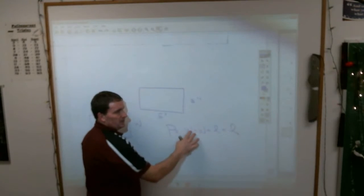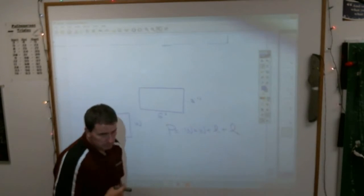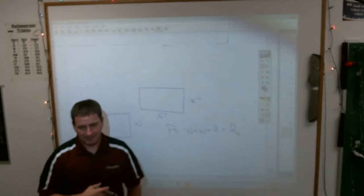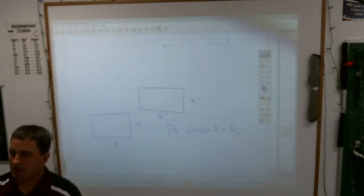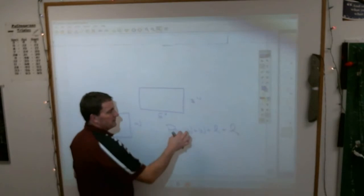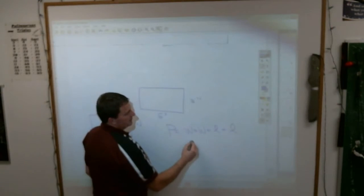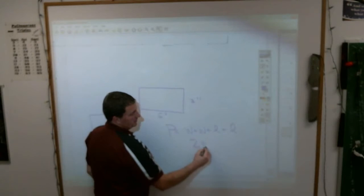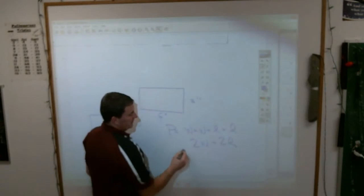If you add the same number together twice, like 8 plus 8 - 8 plus 8 is 16, right? Another way to write 8 plus 8 in shorter form is... 8 plus 8 is the same as what, Wade? 8 times 2. 8 times 2. So instead of saying width plus width, I can put 2 times width, which is what that means, plus 2 times length.